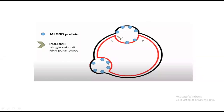The third step is the action of RNA polymerase, which adds a primer. As you know, during DNA replication a primer must be attached to the template strand so that DNA polymerase can start its activity. The single-unit RNA polymerase comes in and adds the primer against the template strand. Keep in mind that the red strand represents the heavy chain, which is acting as the template.